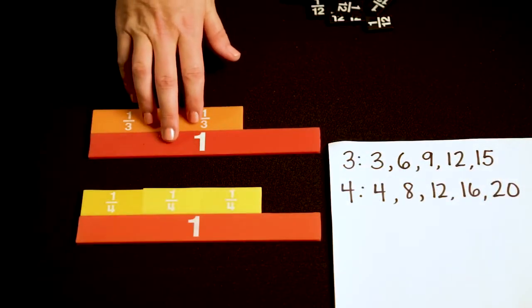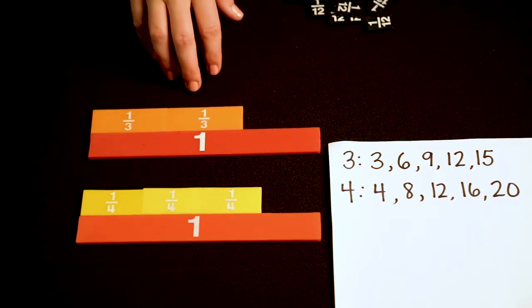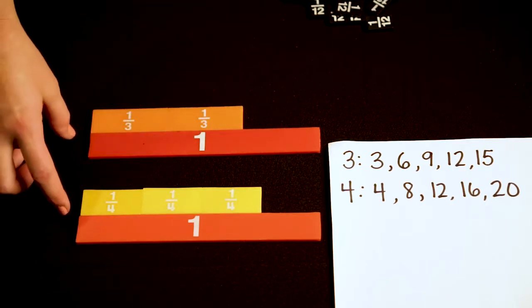Let's add 2 thirds plus 3 fourths. Here I want to focus on getting the thirds and fourths into the same denominator or common denominator.